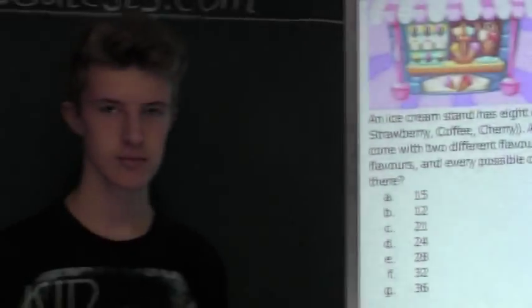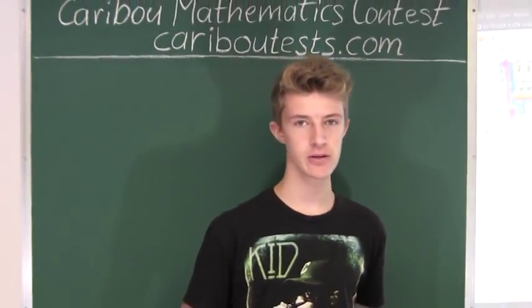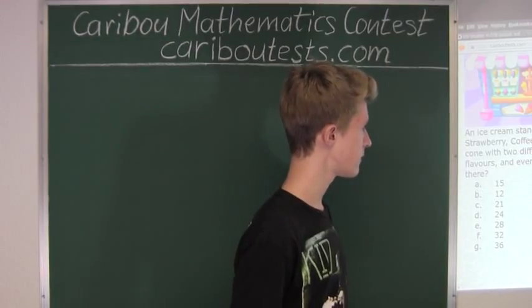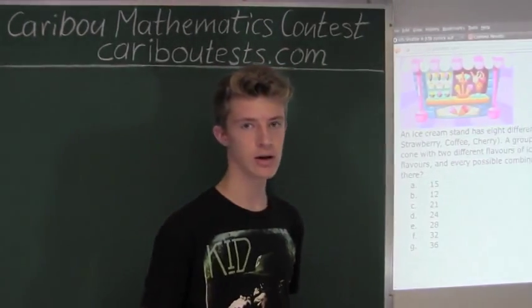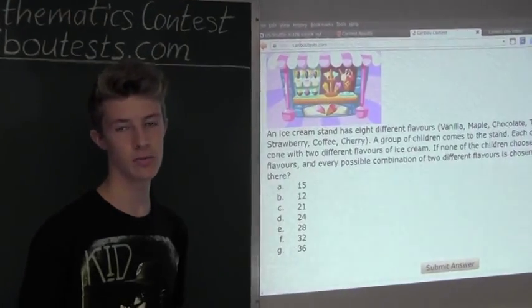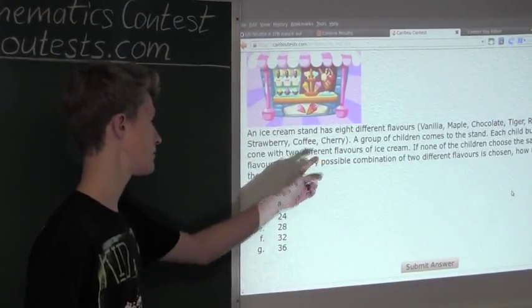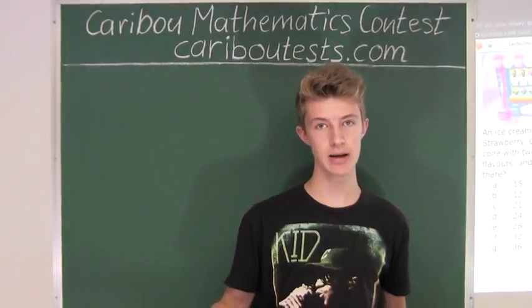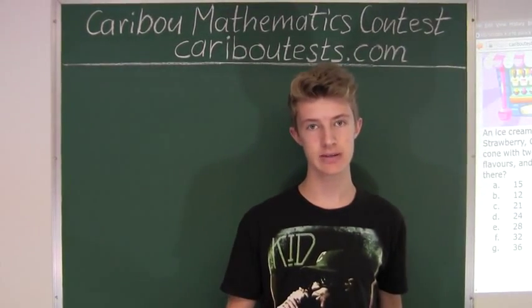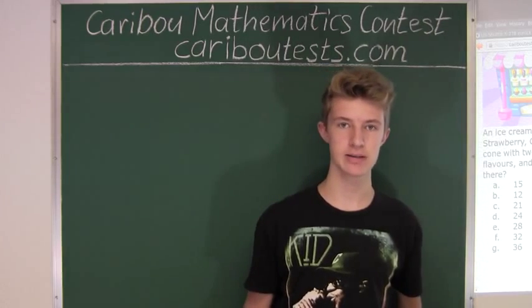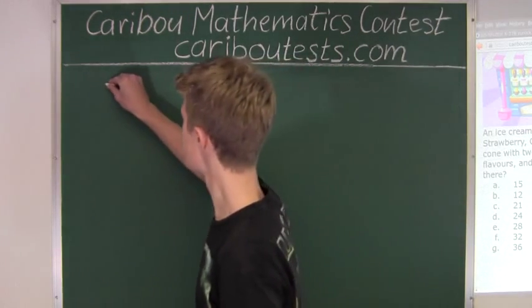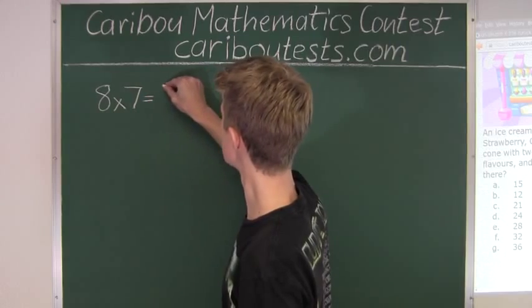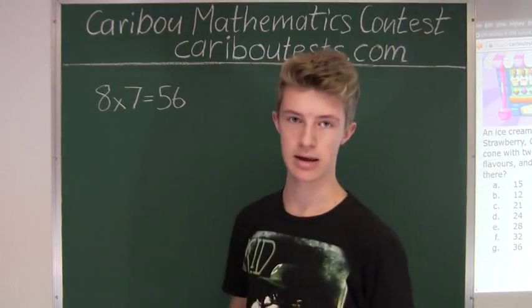Alright, now for each child, for the first flavor, there are 8 different options. And then, for the second flavor in their double scoop cone, there are 8 minus 1, which is 7 remaining flavors to choose from, since they must have two different flavors. And since we know that for each of the first 8 flavors, they are mixed with each of the 7 flavors, we must multiply 8 by 7. Okay, so the answer is 56.